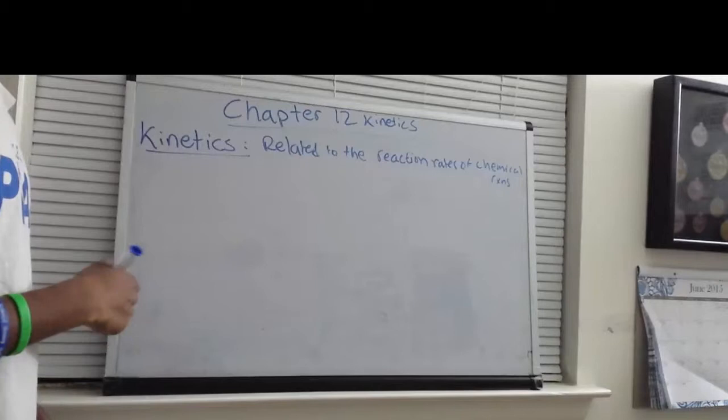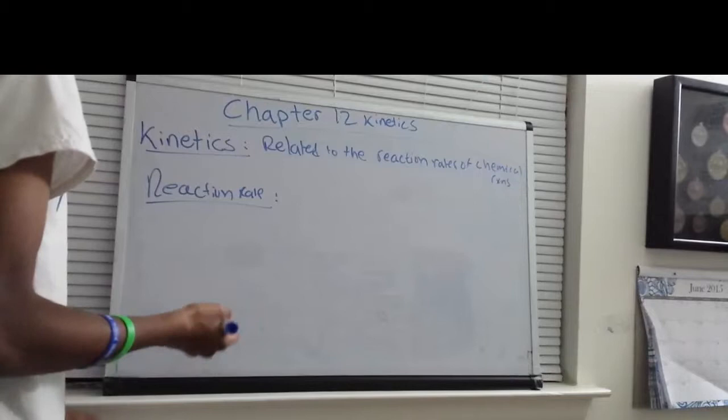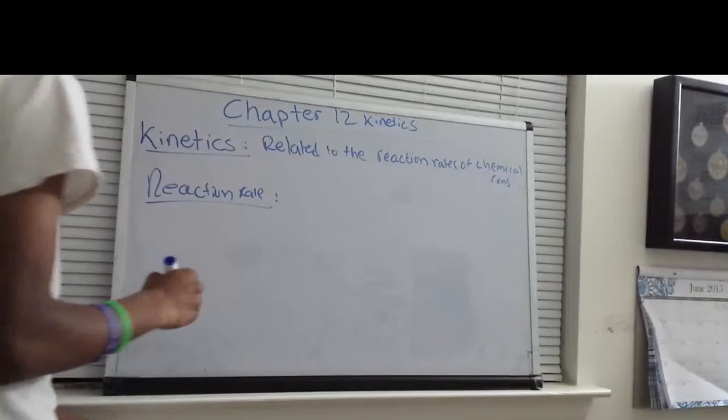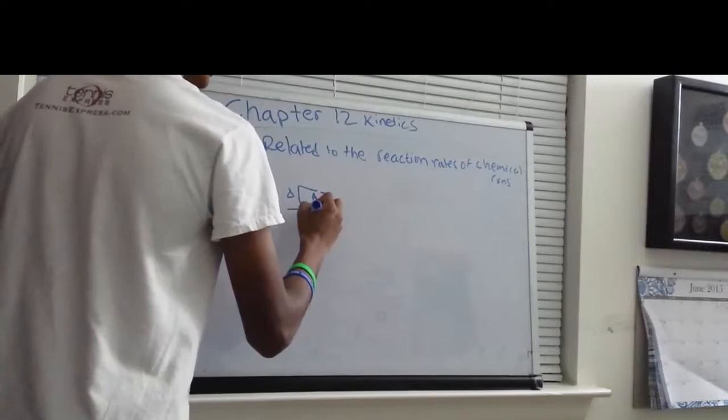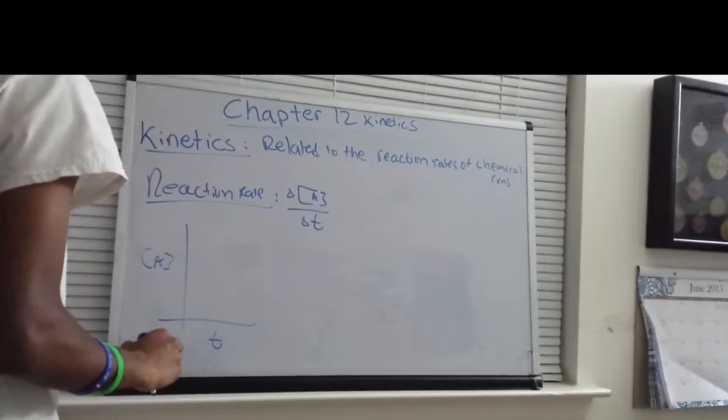So what is a reaction rate? A reaction rate is simply a change in the product's concentration or reactant's concentration over some period of time. It can also be shown as the change in concentration of some compound A over the change in time. So if I were to show you a graph where the y-axis is the concentration of A and the x-axis is T, if it was a reactant, the concentration would slowly decrease over time.